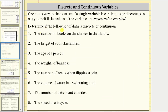We are asked to determine if the following set of data is discrete or continuous. If it's discrete, it is counted; if it's continuous, it's measured. Number one, we have the number of books on the shelves in the library. We would need to count the number of books on the shelves in the library, and therefore this is discrete data. Also, this data can only take on certain values over a particular interval, because the number of books can only be whole numbers.